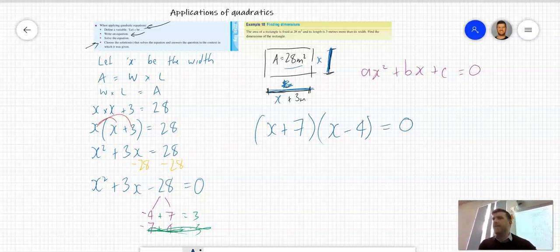Now we know the null factor law. If this times this equals zero, then either x + 7 = 0 or x - 4 = 0. So x = -7 or x = 4.